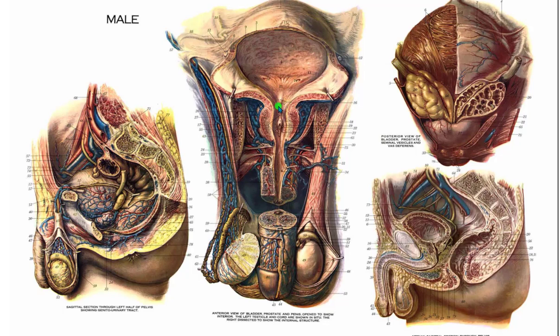This is going to be the prostatic urethra running through the center part of the prostate gland here. And this opening that I can see is the opening of the ejaculatory duct that's going to be coming from the vas deferens. We'll come back and look at another view of that when we look at this sagittally.